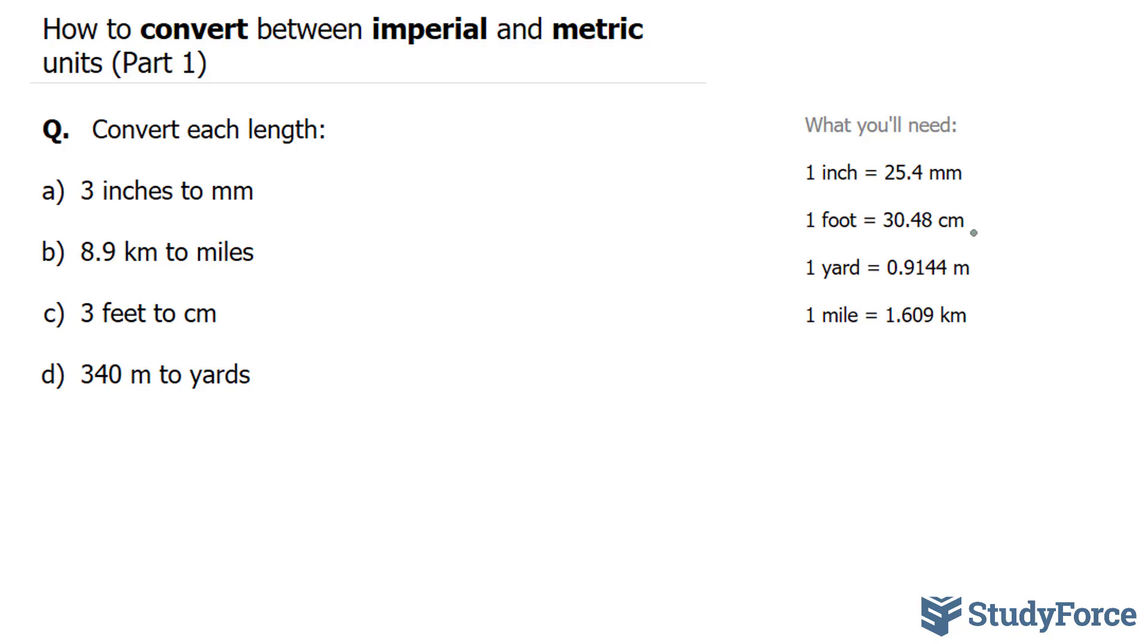Every conversion ratio that you'll get will look something like this, where you have something on the left side and then something on the right side. Every conversion ratio can be written as a fraction. For example, this one can be written as 1 inch over 25.4 millimeters, or it can be written as 25.4 millimeters over 1 inch. It's very important that you recognize this, that it can be written in two ways. The reason why we write it as a fraction is because it makes the process a lot easier.